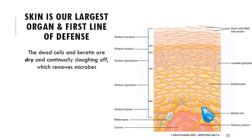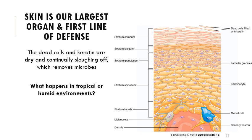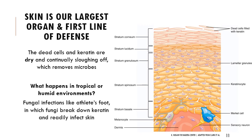The dead cells at the top of our skin and keratin are very dry and constantly falling off, which removes microbes — even bacteria that get into those top layers are constantly being shed. However, in tropical or humid environments like locker rooms, certain fungi produce compounds that hydrolyze keratin — using water and enzymes to break it apart — creating openings in our skin. That's why athlete's foot, a fungal disease, is more of a problem in wet locker room environments.